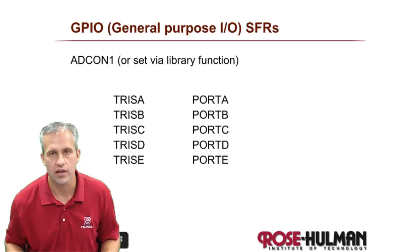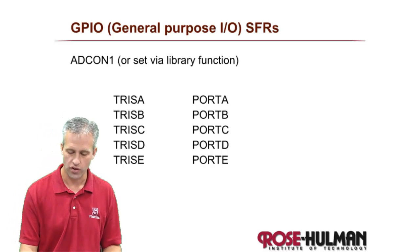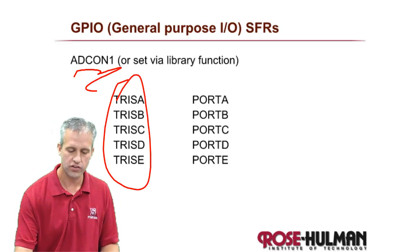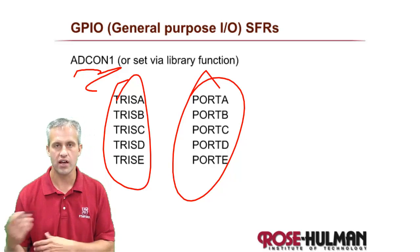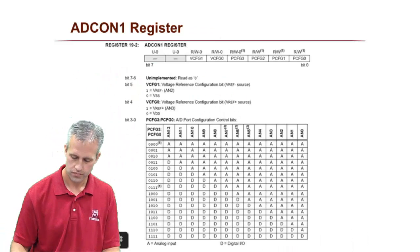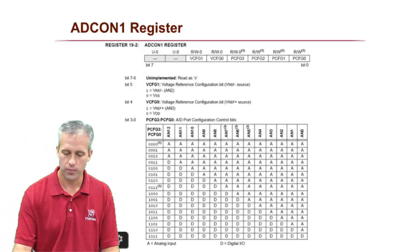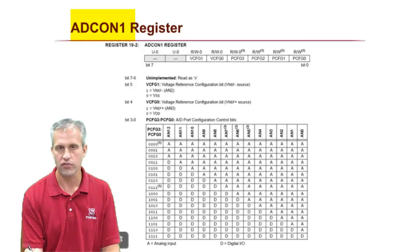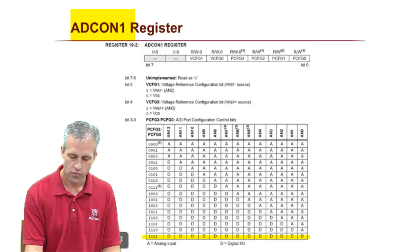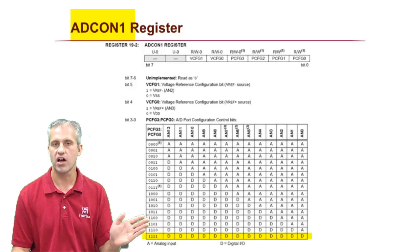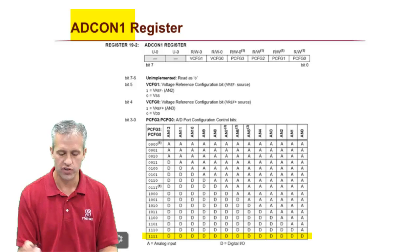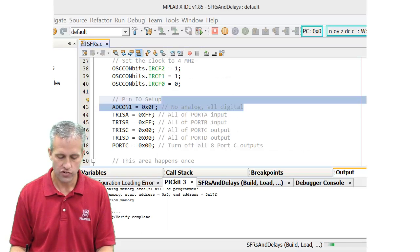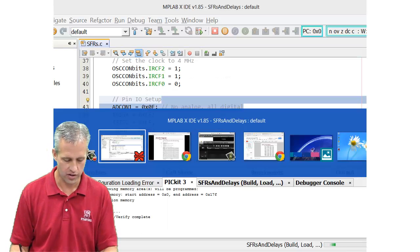The way you do it is with special function registers. First you set analog or digital, then you set input or output, then you set whether it's high or low. As a quick review from last time: to set analog or digital, we have a special function register called ADCON1. Today, we'll just be setting ADCON1 to a value of 0x0F, which means all digital — don't use the analog world. You should already have that set up in your project.